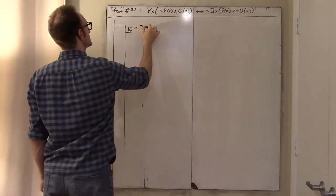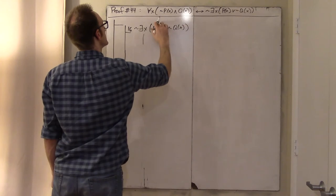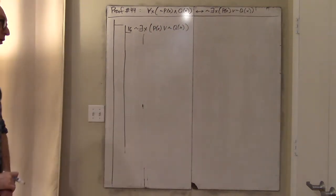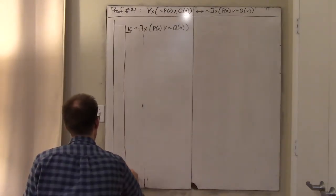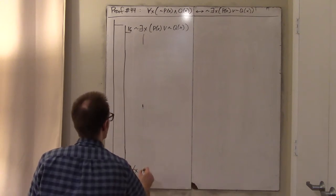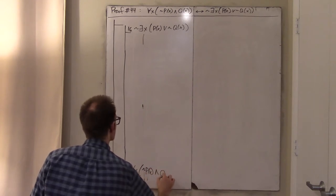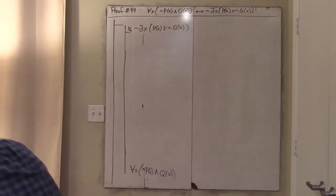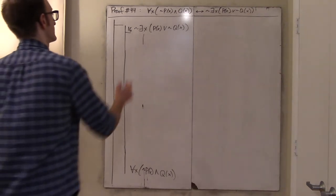There does not exist an x such that p of x or not q of x. What do I know? This only. What do I want? That. Way down here, my goal statement is: for all x, not p of x and q of x. How should I achieve this goal? There's really one good way to prove a universal, and that is with a universal proof.